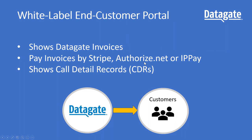We also have a white label in-customer portal. If you're using ConnectWise you have a lot of choices in terms of the type of portal to use — one option is the DataGate portal, which can display DataGate invoices. If you're using DataGate to generate all your invoices, you can use the DataGate in-customer portal, which is included in the DataGate package. With that portal, customers can also pay invoices online. We connect to Authorize.net, Stripe, and we're in the process of integrating with IPPay. Payment information then flows back into your ConnectWise or QuickBooks systems to track account balances.